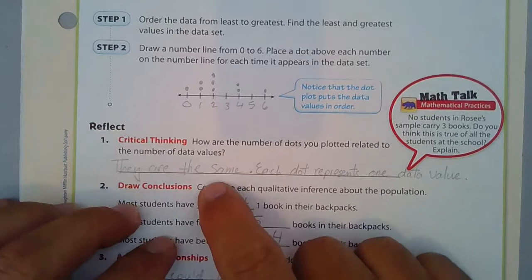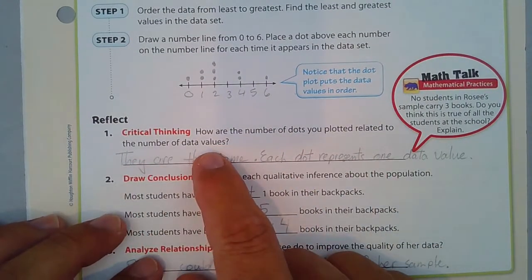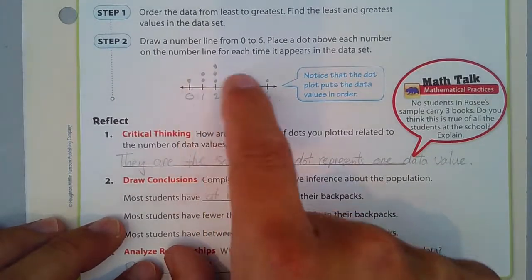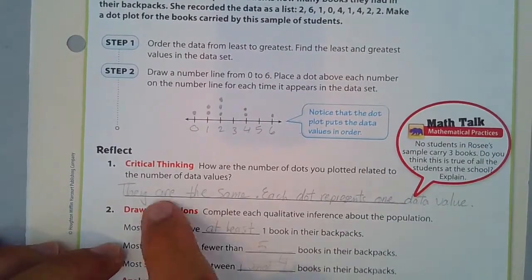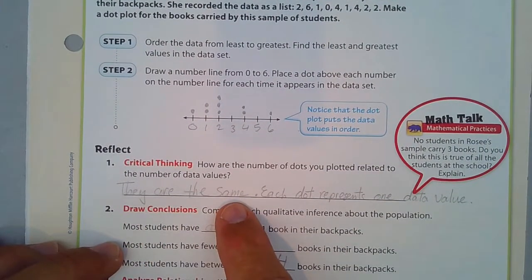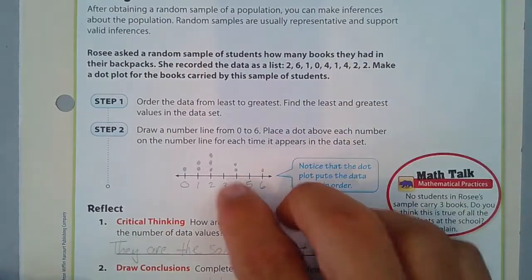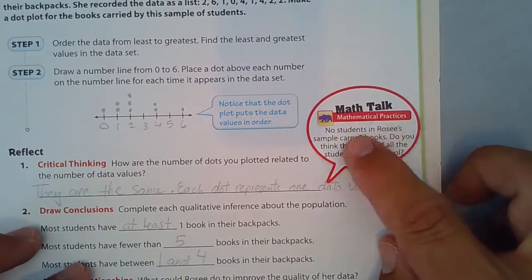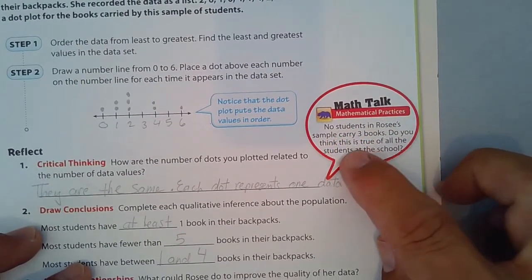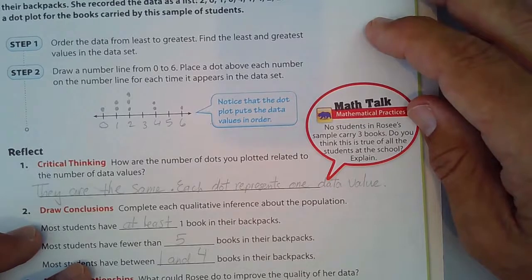Let's reflect on this. The critical thinking part: how are the number of dots you plotted related to the number of data values? Well, they are the same. It's the same data. Each dot represents one data value. It's another way of looking at the data. It's organized now. That's the advantage to this. And in class, we're going to be talking about no students in Rosie's sample carry three books. Do you think this is true of all the students in the school? Be ready to explain that in class.